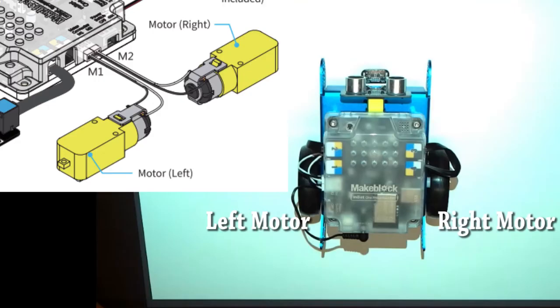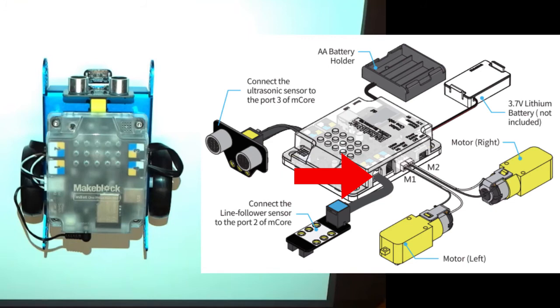The black and white wires connected to the right motor go into the M2 motor connector, whereas the left one goes into the M1 connector. Connect the RJ25 connected to the bottom infrared sensor to the number 2 slot on the core.